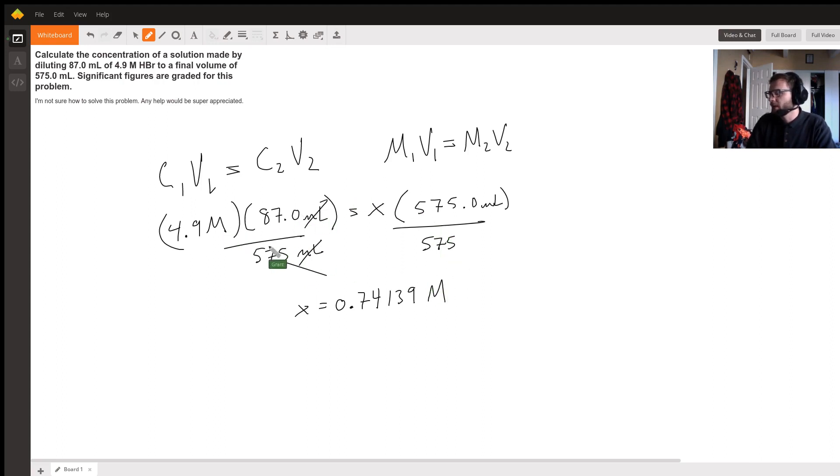And then because we have two sig figs here, anytime you multiply or divide, you take the lowest amount of sig figs. So our answer is going to be 0.74 molar.